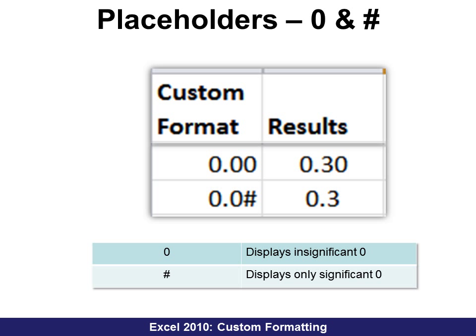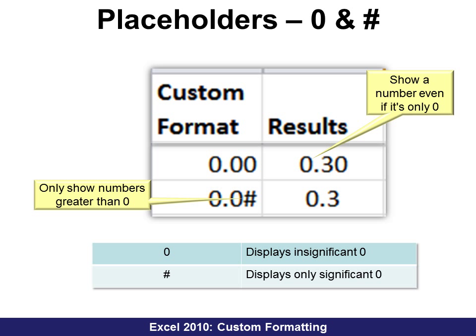Placeholders are zero and pound sign, or hashtag. They hold a place just in case. The difference is: zero is an insignificant placeholder — it will show zeros even if they don't need to be there. For example, that zero does not need to be there, but it will show it anyway. With the hashtag, it will only show it if it does need to be there. Because we don't need a zero after the decimal, it will not show.